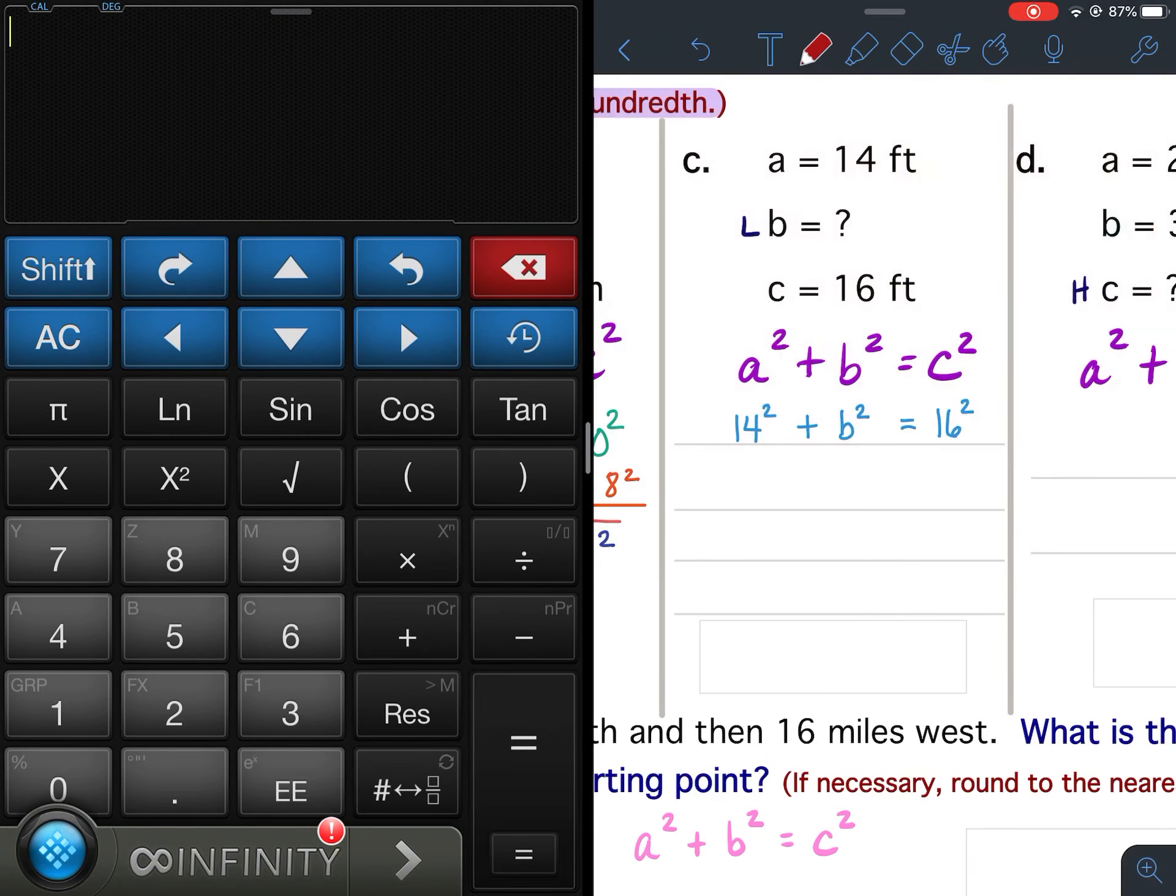...what I'm going to have you do instead is draw an arrow like that, because we're going to take that 14 squared to the other side, because we want b squared by itself here on the left.